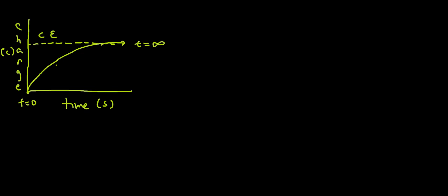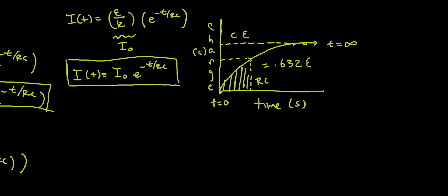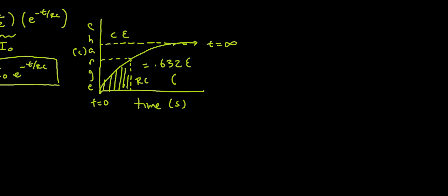The AP will also ask that you know the RC time constant. At time RC, your capacitor will have charged to 63.2% of the maximum charge. Where does that come from? Going back to the equation, if I plug in RC for time, I get 1 minus e to the negative 1, which is roughly equal to 1 minus e to the negative 1, or about 63.2% of epsilon.